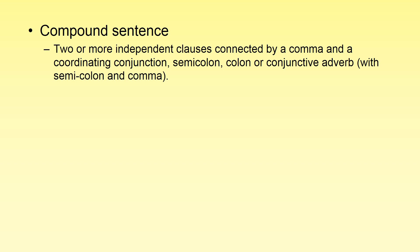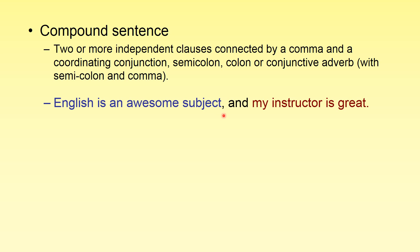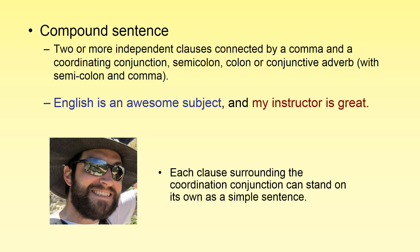Compound sentences contain usually two independent clauses. We join these together using a variety of methods — we've looked at coordinating conjunctions thus far, and pretty soon we'll be looking at semicolons, colons, and conjunctive adverbs. What I want you to remember about compound sentences is that they are two independent clauses joined somehow. For example, 'English is an awesome subject' could stand on its own, and 'My instructor is great' could stand on its own. With a coordinating conjunction and a comma functioning correctly, we have two independent clauses joined together — a compound sentence.